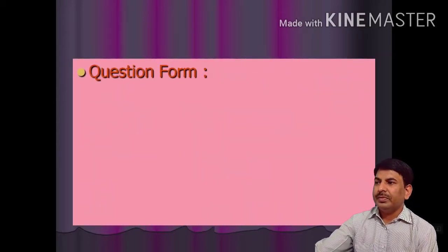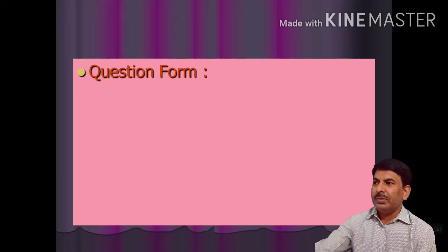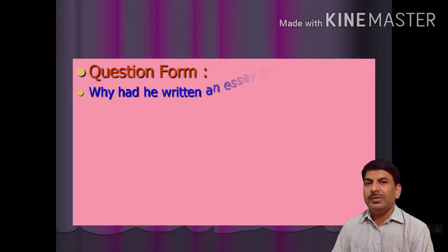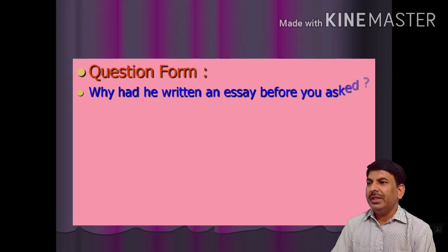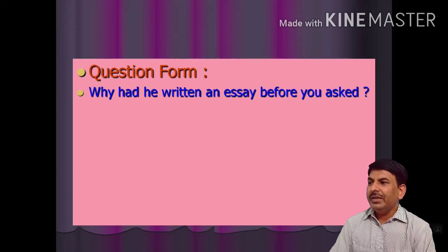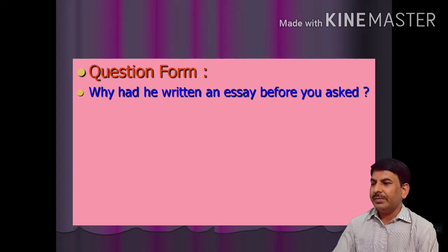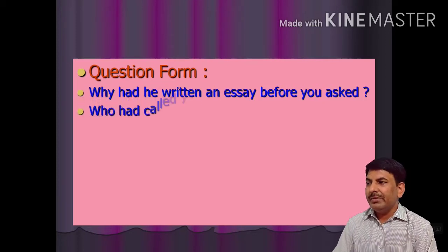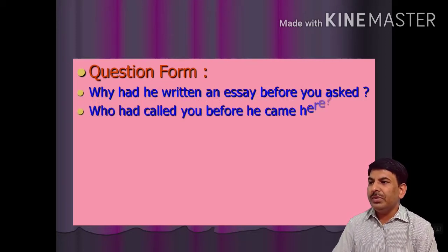In question form, question words — why, what, where, which, how — are placed at the beginning of the sentence. For example: 'Why had he written an essay before you asked?' Another example: 'Who had called you before he came here?'